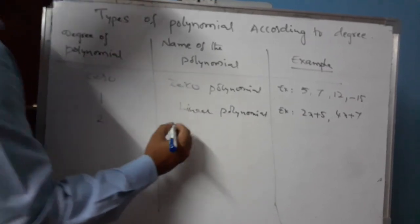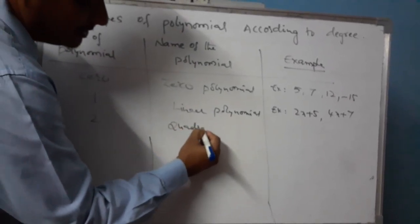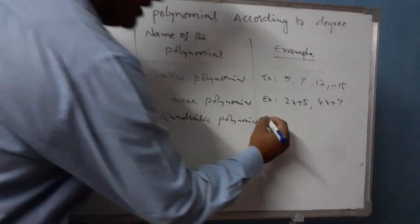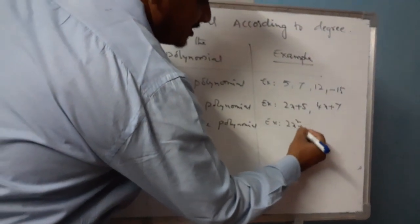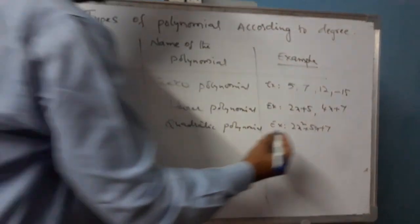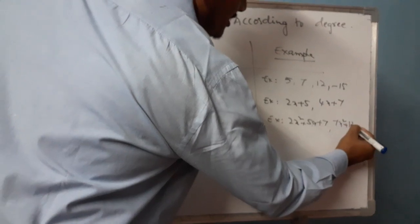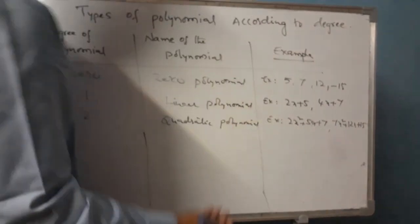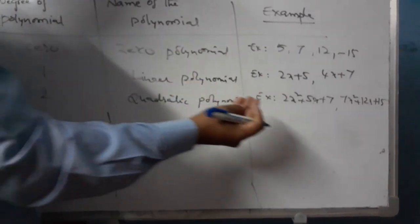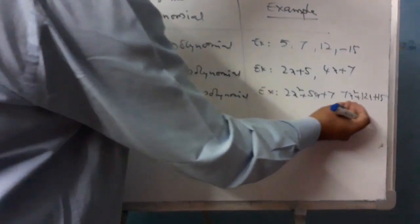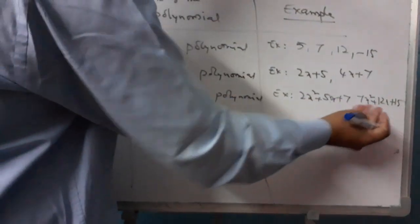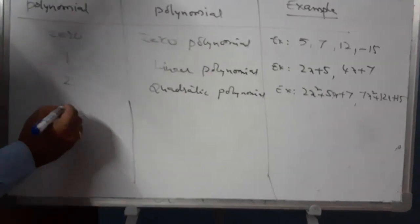If the degree of the polynomial is 2, it is called a quadratic polynomial. Examples: 2x squared plus 5x plus 4x plus 7, and 7x squared plus 2x plus 15. The highest power of x is 2, so the degree of the polynomial is 2, and it is known as the quadratic polynomial.